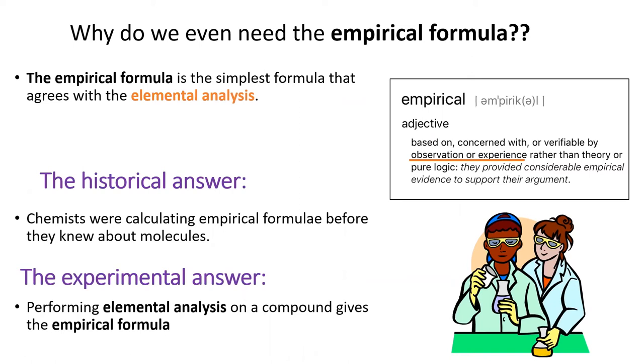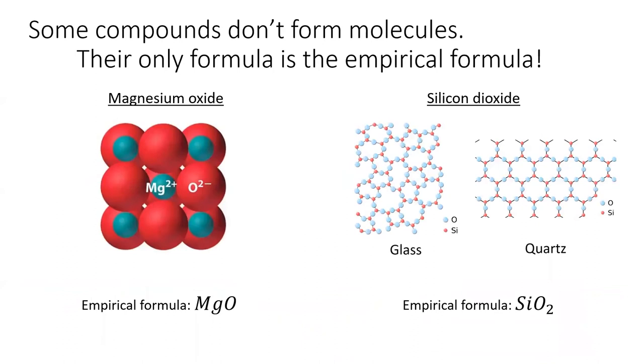Chemists have been doing this sort of analysis long before we had any idea what a molecule was. Also, some compounds don't form molecules. This includes ionic compounds like magnesium oxide as well as amorphous solids like glass and quartz. These compounds can't have molecular formulas. They can only have an empirical formula.